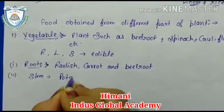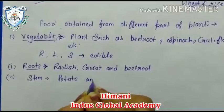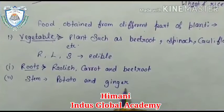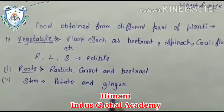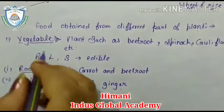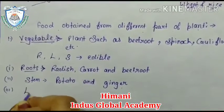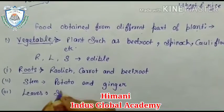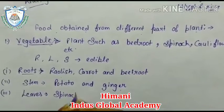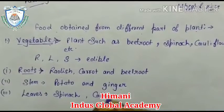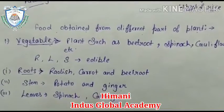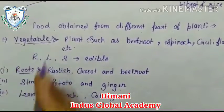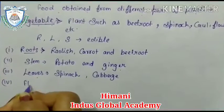Second is stem. Stem includes potato and ginger — these are stems used as vegetables. Third is leaves, like spinach and cabbage — these are leaves that are eaten as vegetables. Fourth is flower.